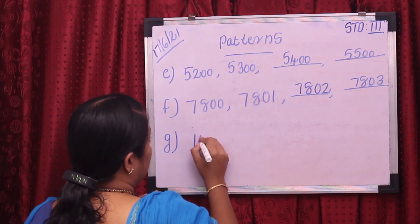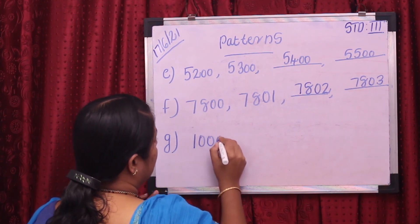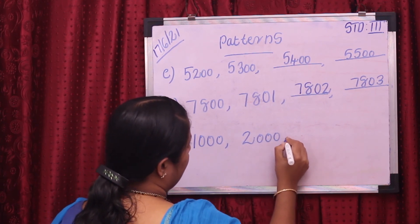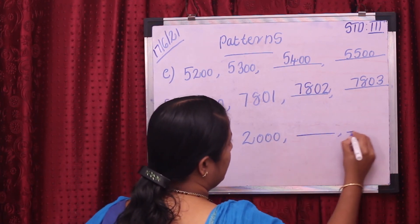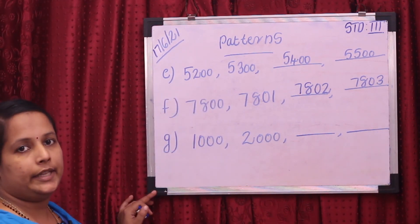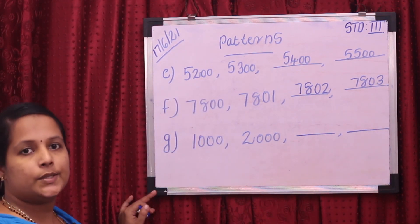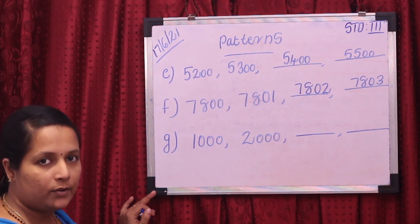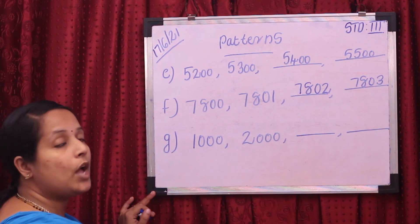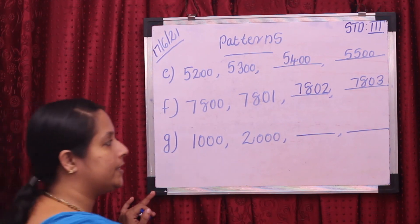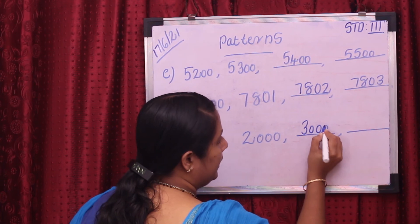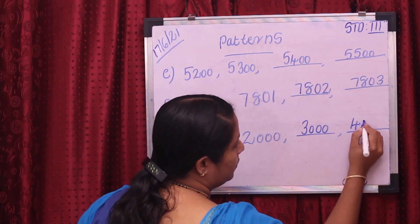Then next example: 1,000, next is 2,000, dash dash. First number is 1,000, second number is 2,000, so the difference is 1,000. The third number is 3,000, and the next number is 4,000.